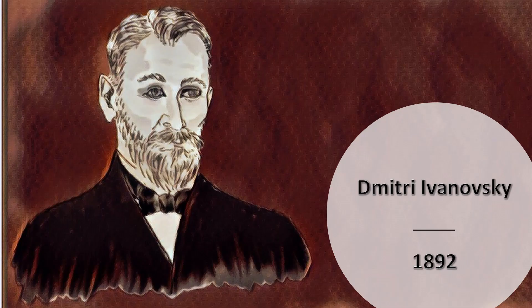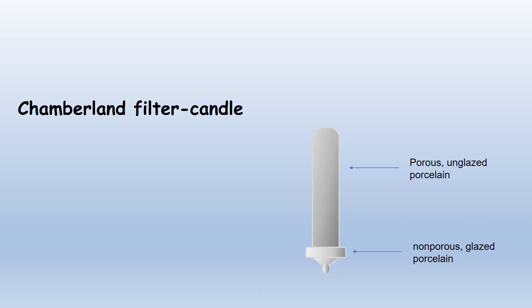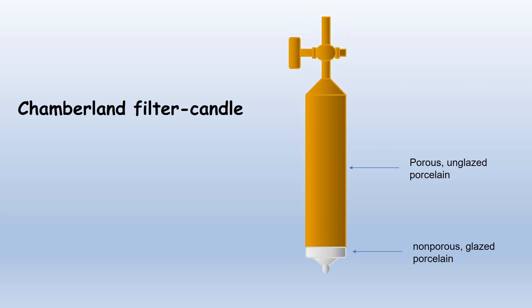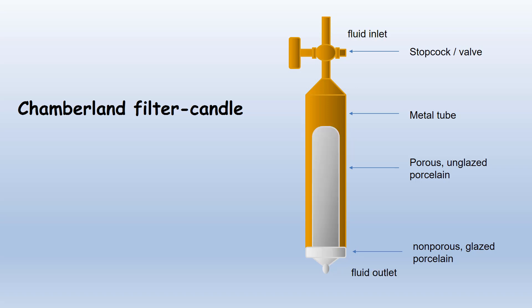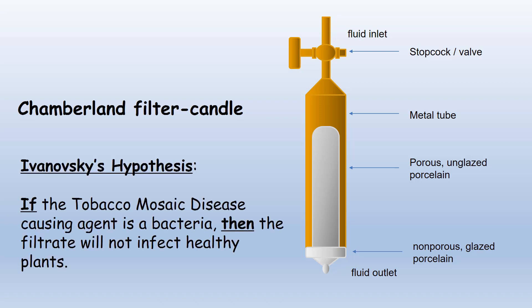In 1892, the Russian botanist Dmitry Ivanovsky suspected that the tobacco mosaic disease was caused by a bacteria. So to prove his theory, he used a common device called a Chamberlain filter candle. This device consists of a hollow, porous, unglazed porcelain tube that is placed inside a metal cylinder, and has a fluid inlet on the top and an outlet at the bottom. Here's an inside view. Ivanovsky proposed that if the tobacco mosaic disease-causing agent was a bacteria, then the filtered liquid — the filtrate — will not infect healthy plants.